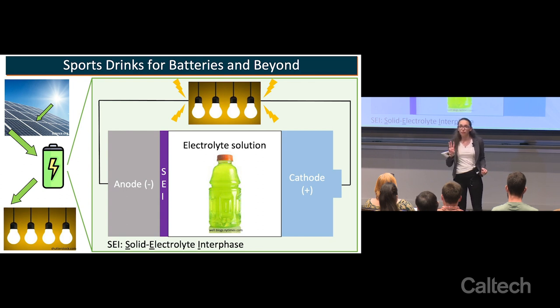Most batteries have three main parts: the cathode, what most folks think of as the positive end, the anode or the negative end, and an electrolyte solution which sits between the two.